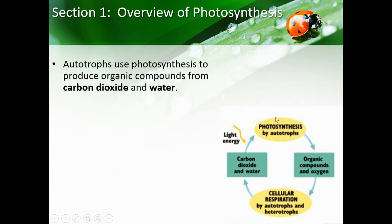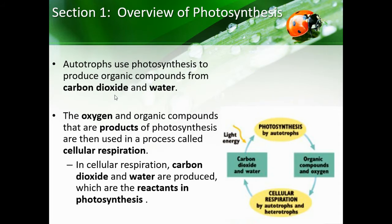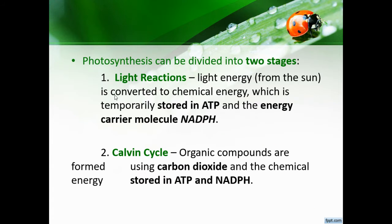We have photosynthesis done by autotrophs, which gives off organic compounds and oxygen. Cellular respiration — done by both autotrophs and heterotrophs — takes in those organic compounds and oxygen and gives off carbon dioxide and water, which then goes back into photosynthesis. It keeps going around in a cycle. The oxygen and organic compounds produced by photosynthesis are used in cellular respiration, and the carbon dioxide and water produced in cellular respiration are the reactants of photosynthesis.